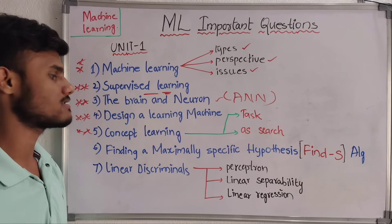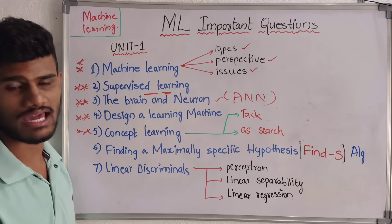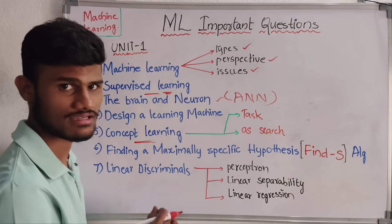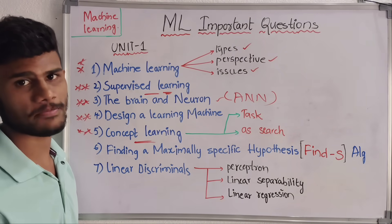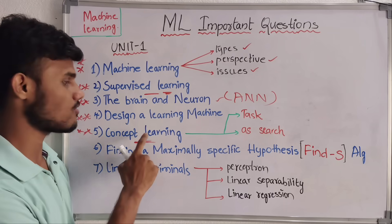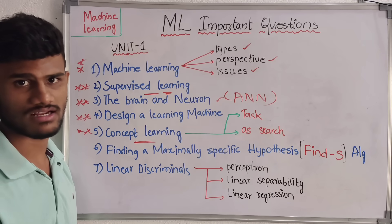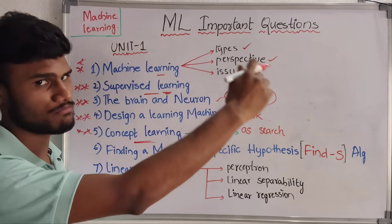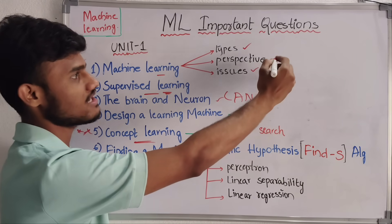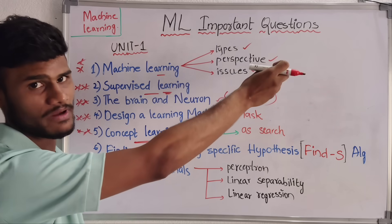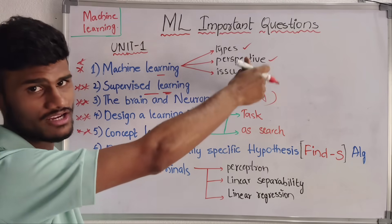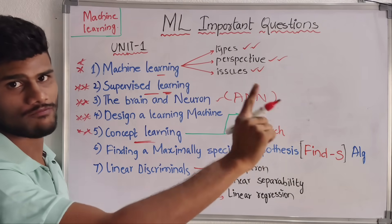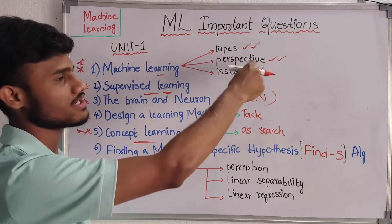Then, next we have Concept Learning of Task as a Search. There are two topics: Concept Learning as a Task and Concept Learning as a Search. These would be combined into one question. Coming to the first question, Machine Learning types are explained. If they ask about perspective, you can completely write about these three topics — types, perspectives, and issues. If you learn one question, you can attempt any question in this.